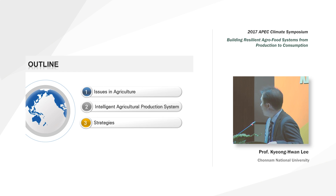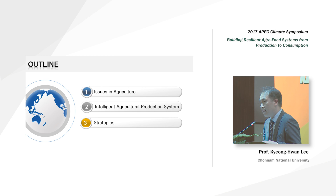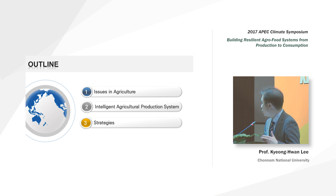The outline is like this. First, I will briefly overview the current issues in agriculture. Second, I want to introduce an intelligent agriculture production system consisting of a monitoring system, decision-making system, and actuating systems. Finally, I want to talk about some strategies to speed up applying this system to real fields.